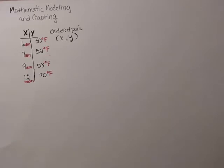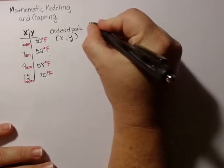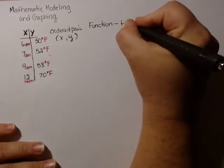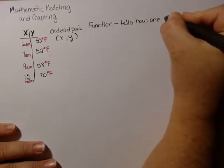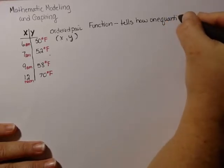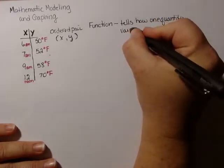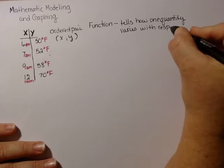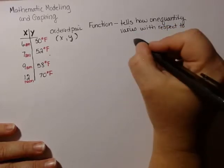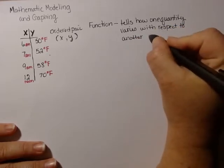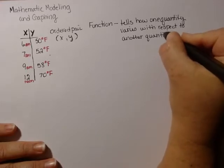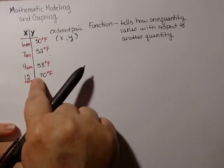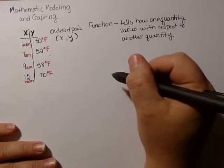Well, what we now have is we are showing a function. That's what we call this. It's a function. And all a function does is it tells how one quantity varies with respect to the other quantity. So it's just basically that relationship we talked about.